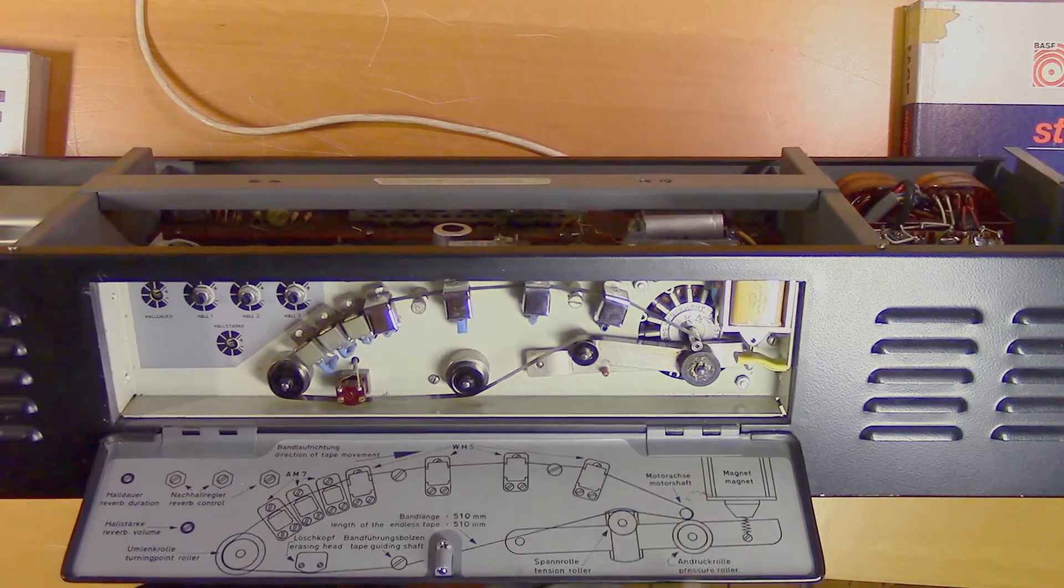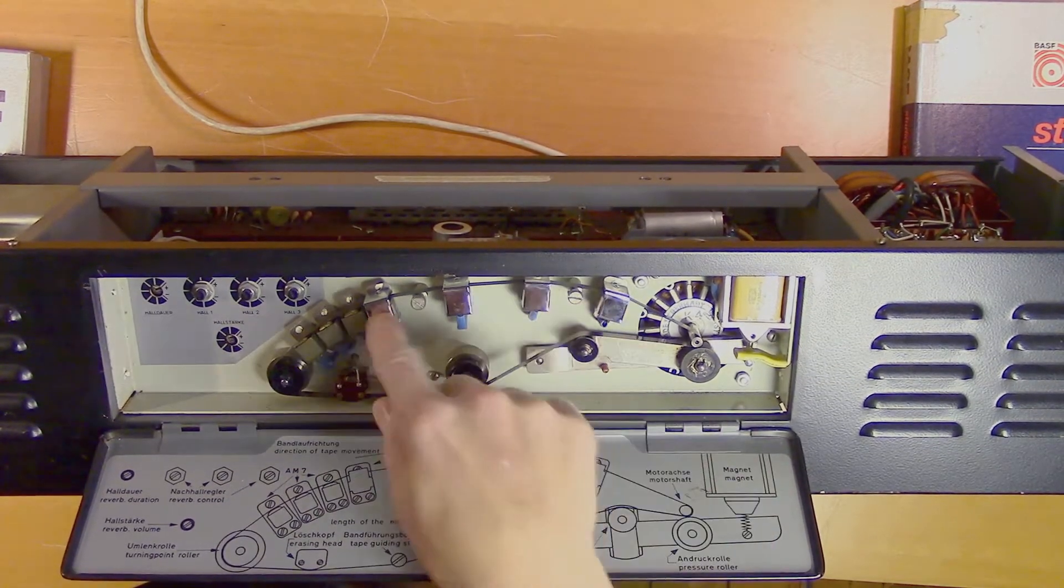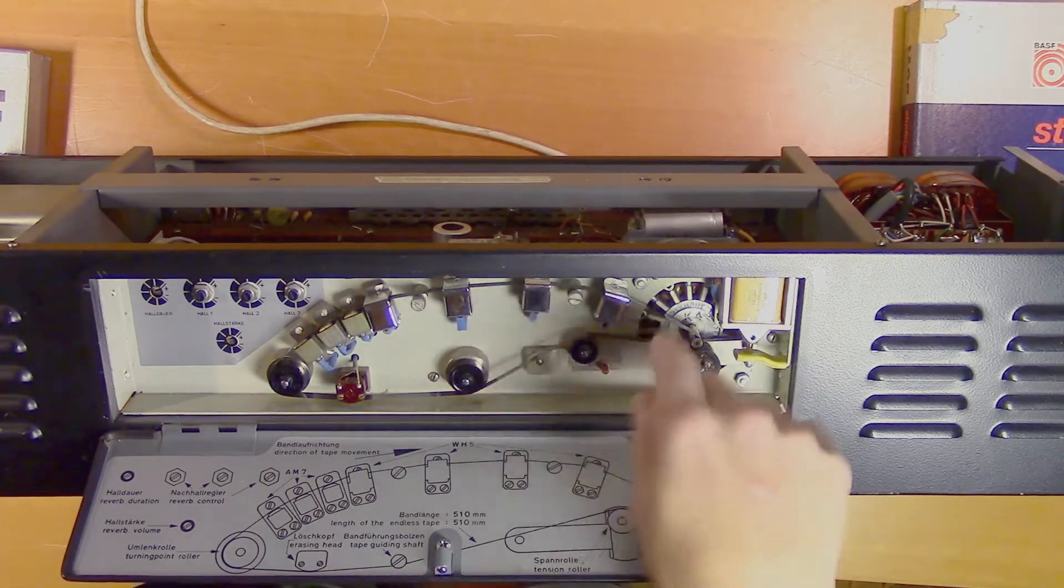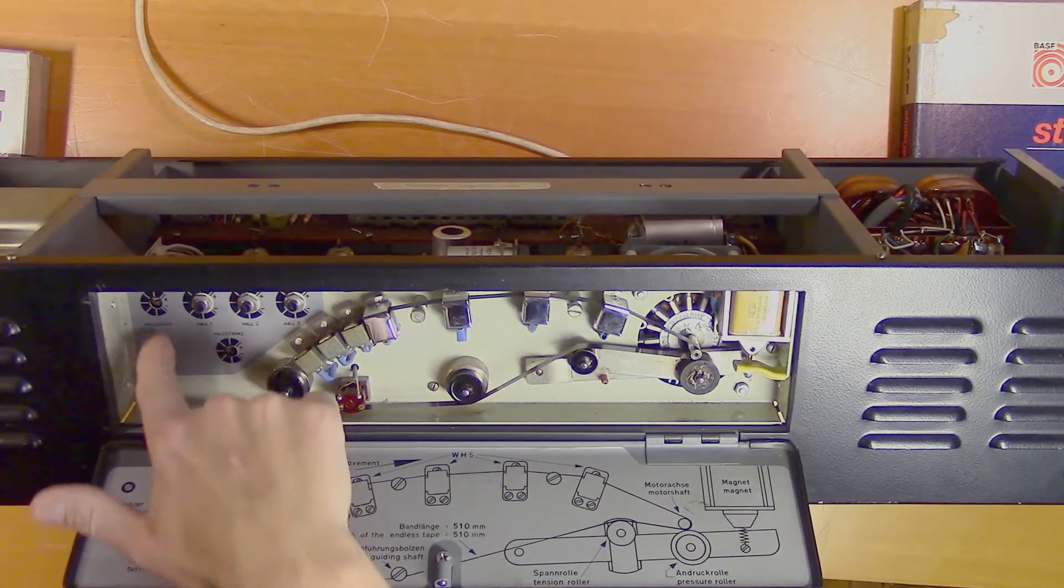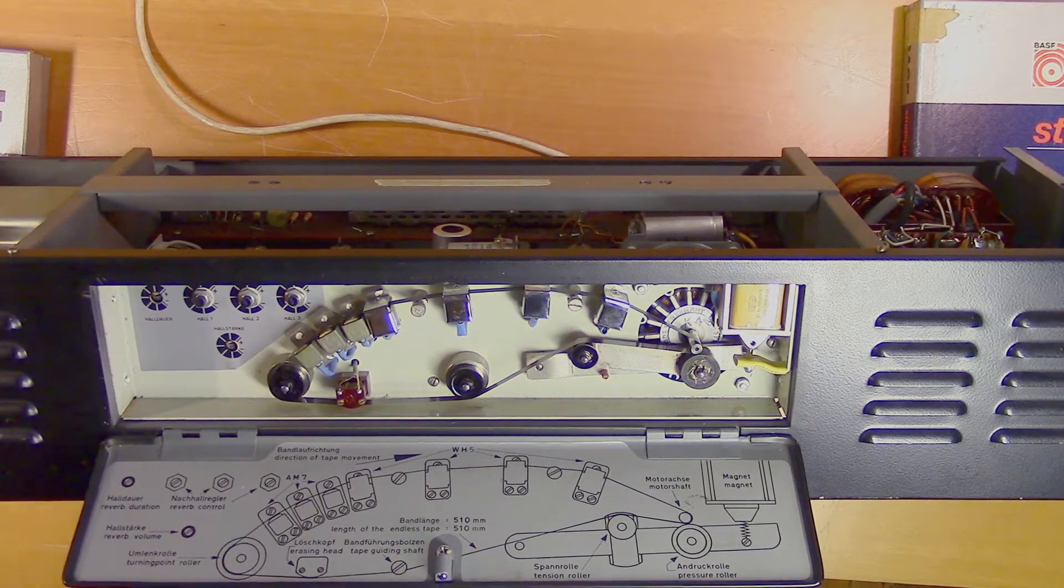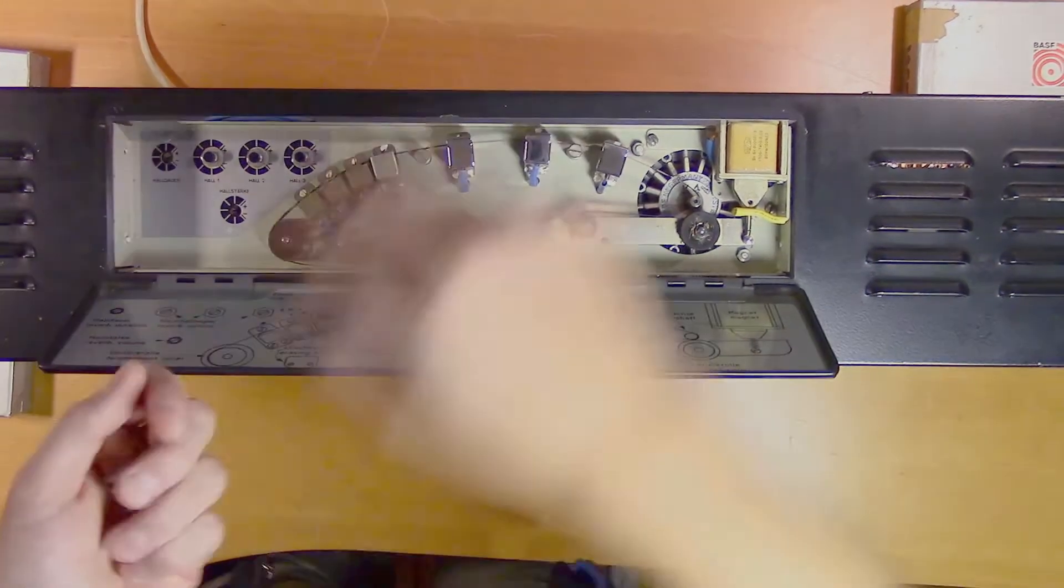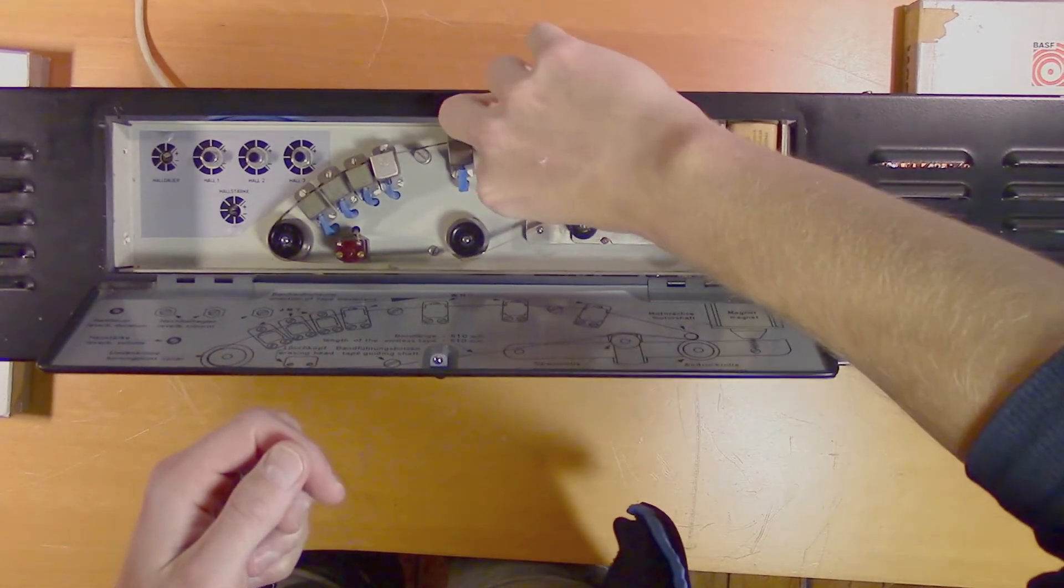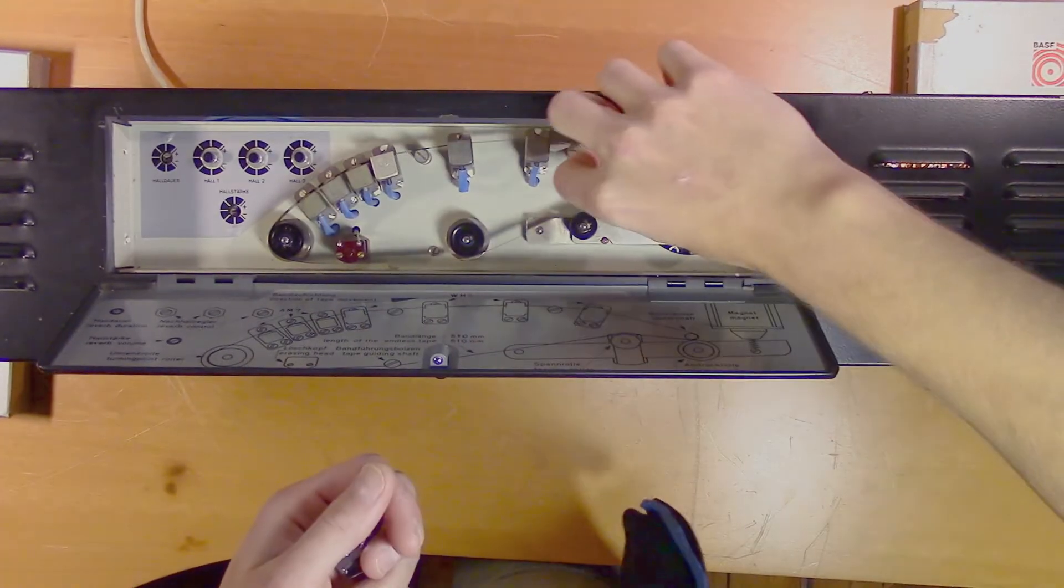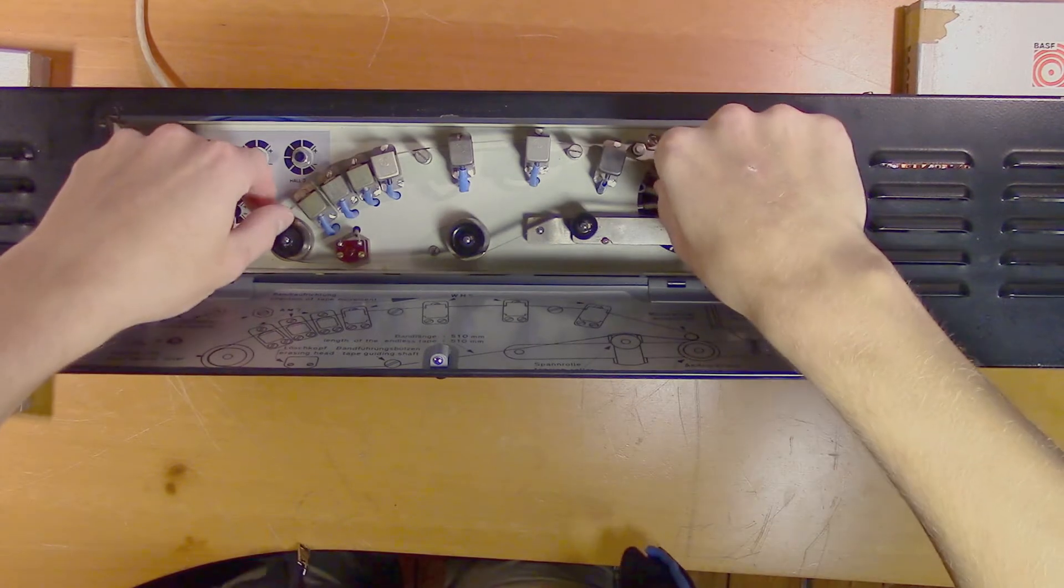So this is just a continuous loop of magnetic tape that records your sound and then plays it back through any of these playback heads. And then the magnetic tape is erased and the loop continues. And here you have a few parameters of the tape echo that you can adjust. So to remove the tape, you just detach these covers and the tape comes right off.